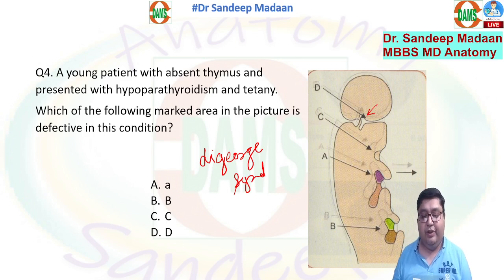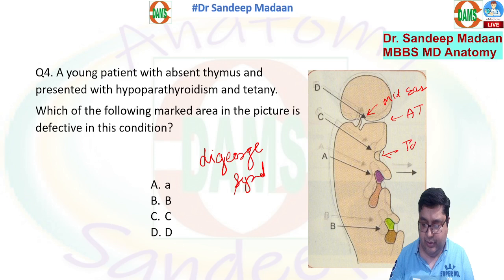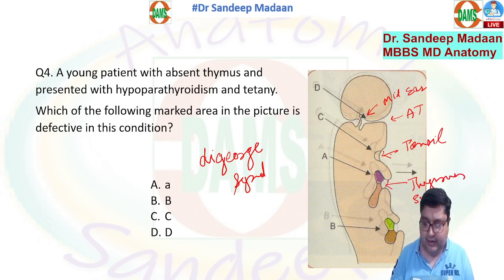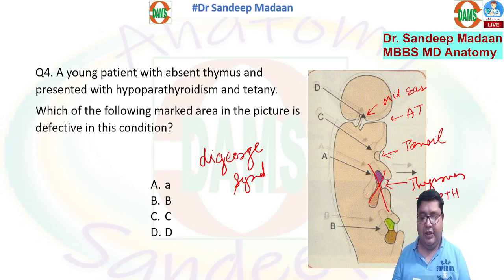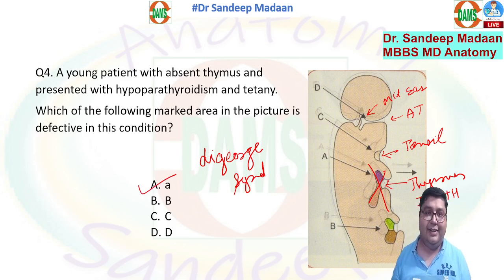The second pouch makes the tonsil. The third pouch makes the thymus and also the superior and inferior parathyroid glands. If there is a defect in the third pouch, the patient will have no thymus and will have a deficit of the parathyroid — which is exactly the picture given. So A, meaning the third pouch, is the answer. The options were not written in sequence.